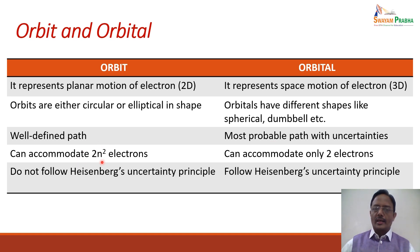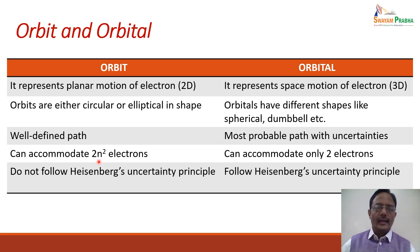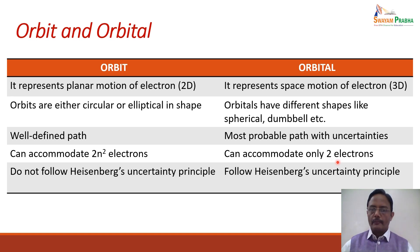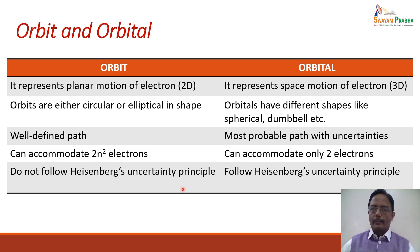An orbit can accommodate 2n² electrons. For example, in K-shell n=1, maximum electrons = 2; for L-shell n=2, electrons = 8. But an orbital can accommodate only two electrons, and these two electrons have opposite spins — one with spin quantum number +½ and the second with −½. In case of an orbit, it is a fixed path, so Heisenberg's uncertainty principle is not followed. But in case of an orbital, Heisenberg's uncertainty principle is strictly followed. The orbital is in fact the outcome of Heisenberg's uncertainty principle.